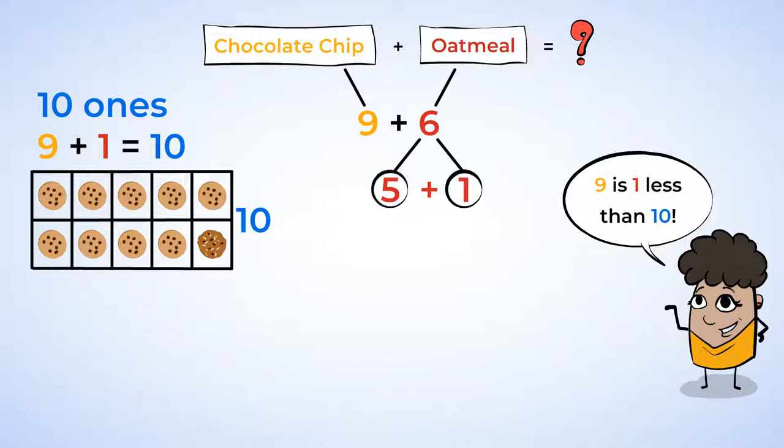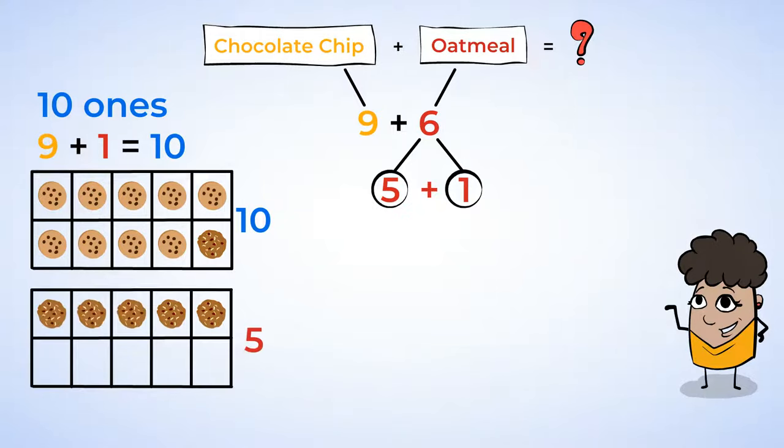Next step, what do you do with the rest of the oatmeal cookies? You could put them in a 10-frame. Now you have five ones. You can combine the one 10 and five ones to say that 10 plus 5 is 15.